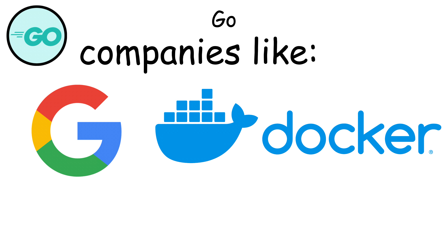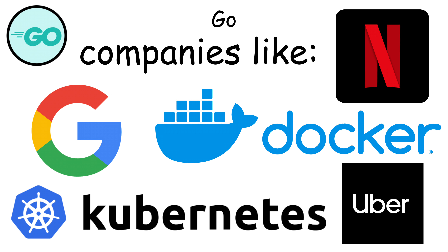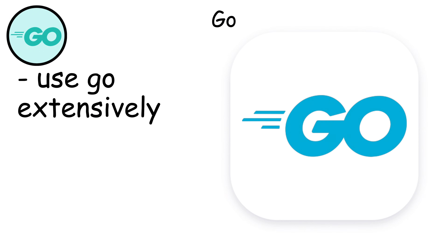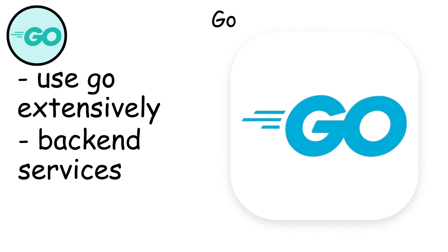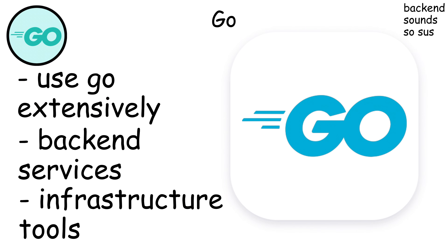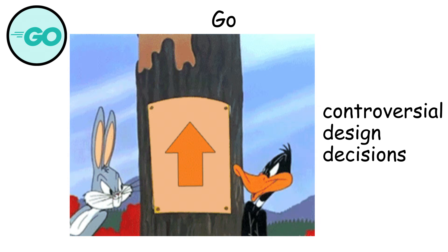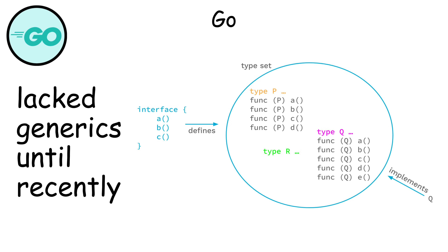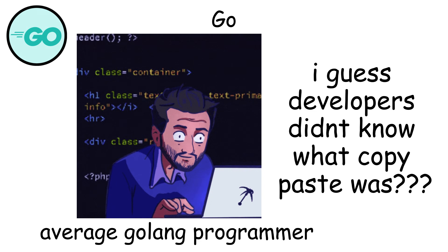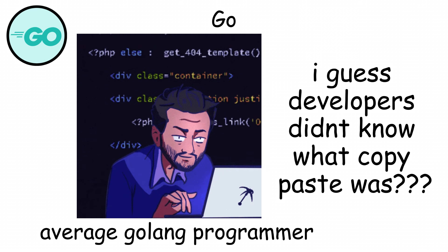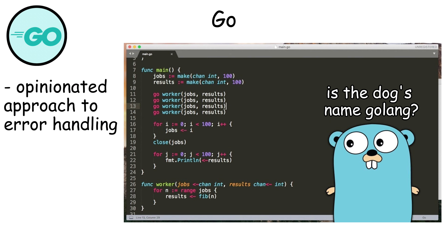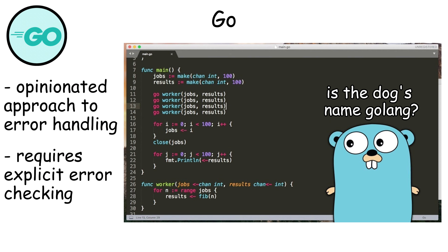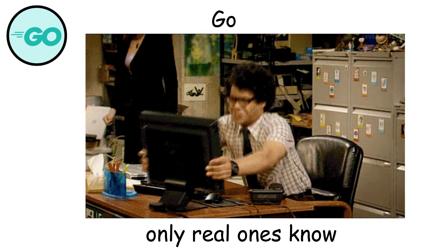Companies like Google, Docker, Kubernetes, Uber, and Netflix use Go extensively for back-end services and infrastructure tools. However, Go has controversial design decisions. It lacked generics until very recently, which meant developers had to write repetitive code. Go also has a very opinionated approach to error handling, requiring explicit error checking, which many developers find tedious.